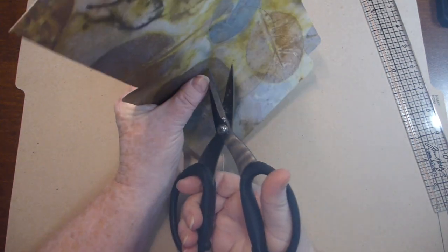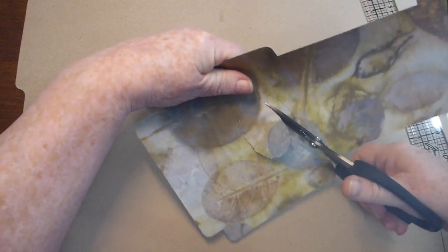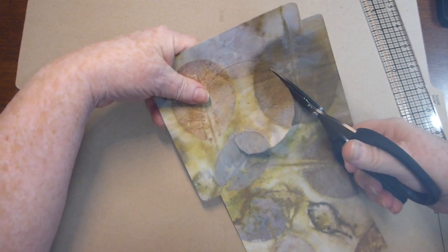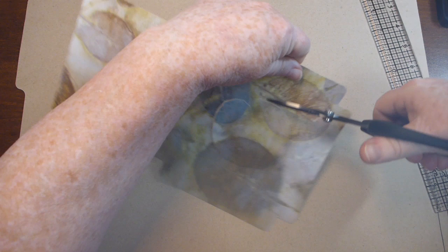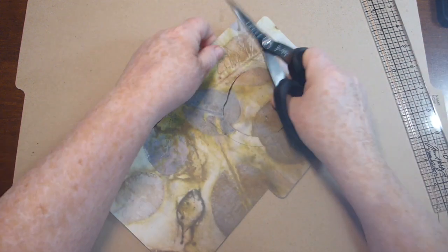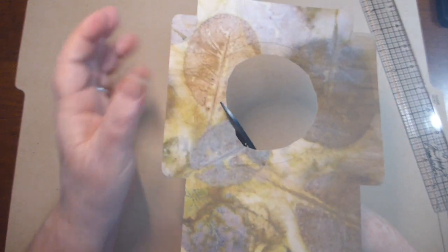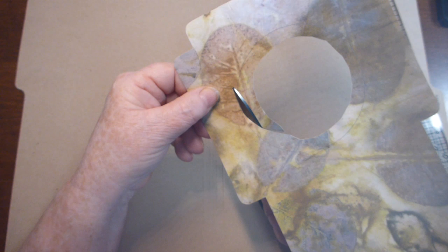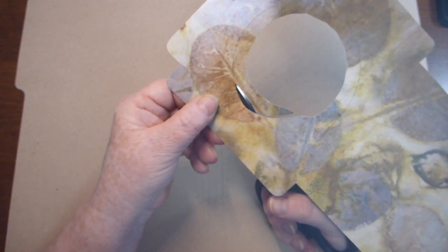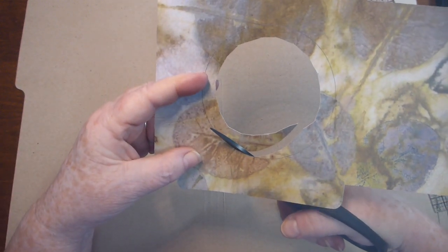I'm just going to poke my scissors in there. And I do a really rough cut first to get the center out of the circle. Because then when you've got a little more room in there it's a little easier to cut it out. So now I like to cut with my line on the left side of my scissors. Everybody might do this a bit different. But this is the way I do it. And I'm going to take my time because I do want it to be as smooth of a circle as possible.